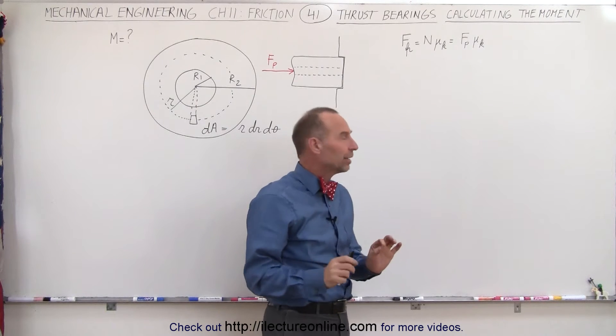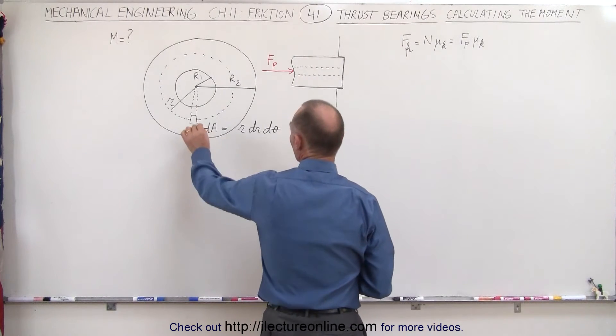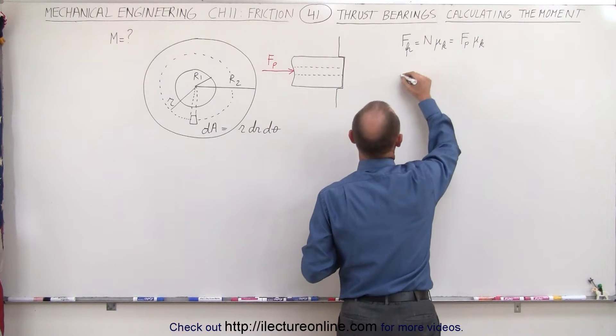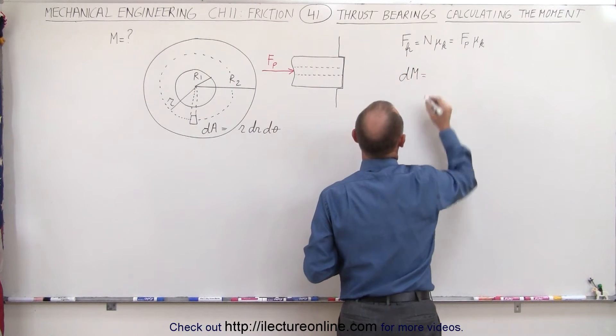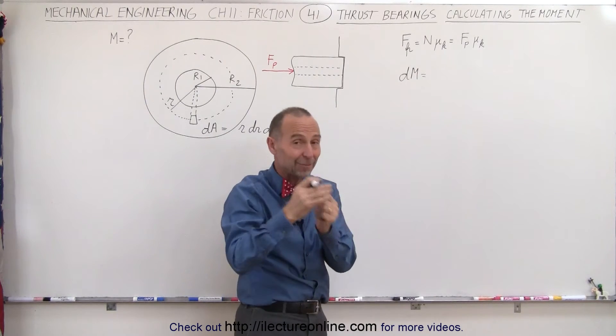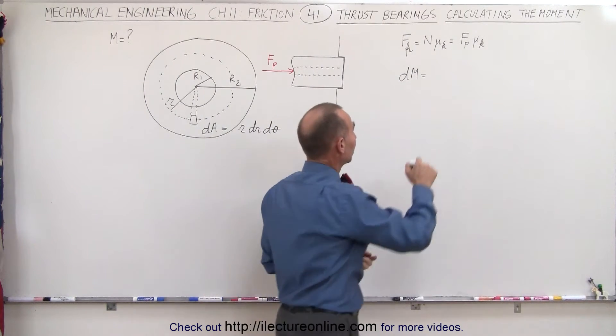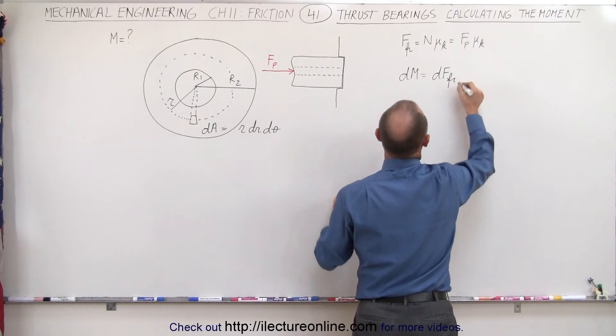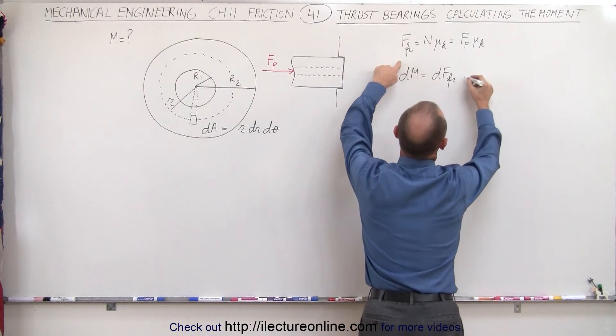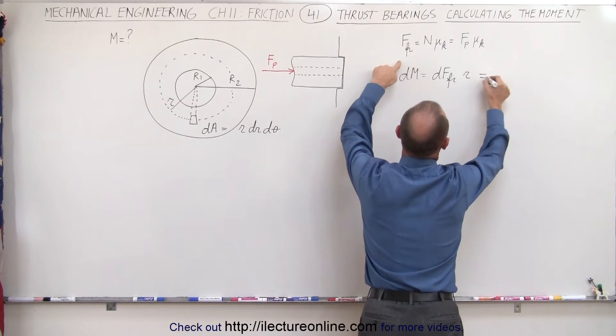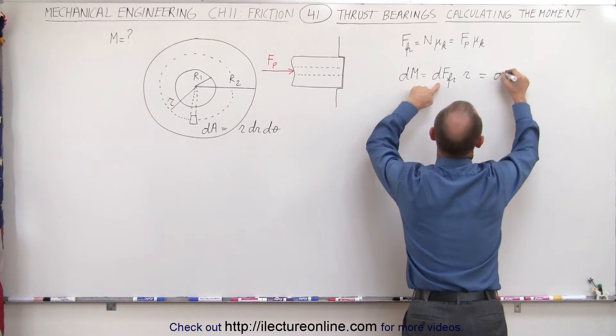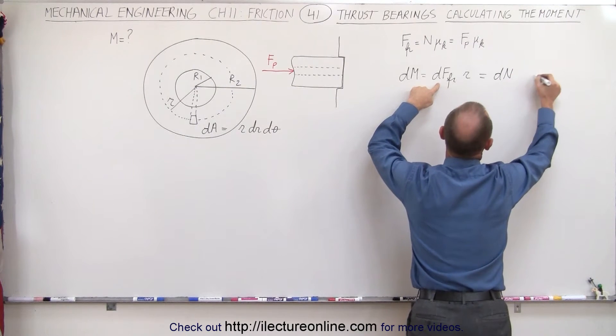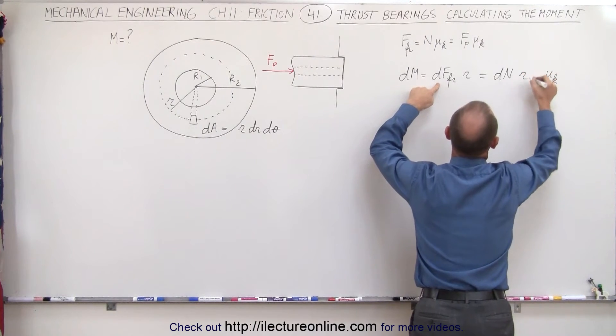So what we're going to calculate here is the moment caused by just a small little area element. And we can calculate that by the following. We know that dm, the moment, is going to be equal to the force times the radius, the moment arm of the motion. And so the force is going to be the dF friction times the radius R. And of course the dF friction is going to be equal to the d normal times mu sub k, and I'm going to put that at the end times the radius R.